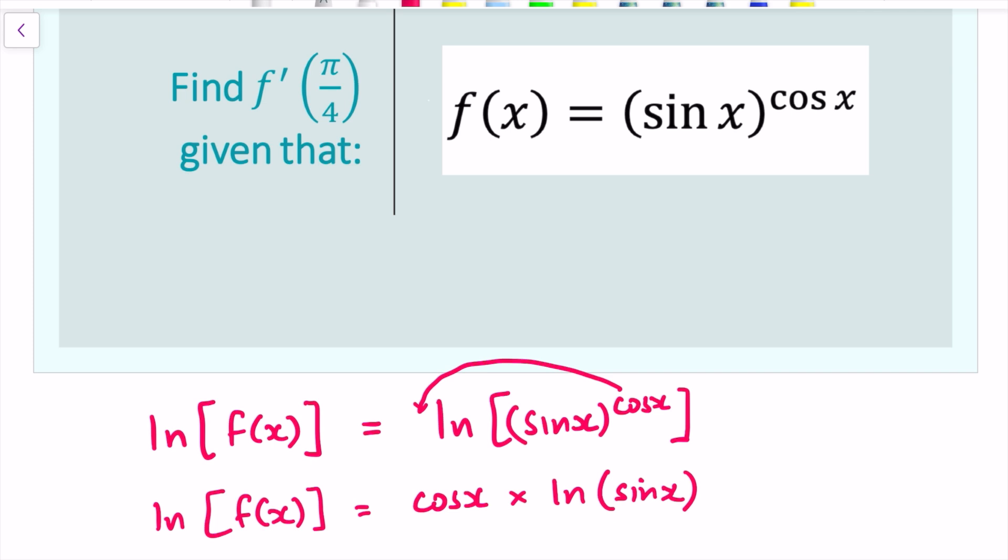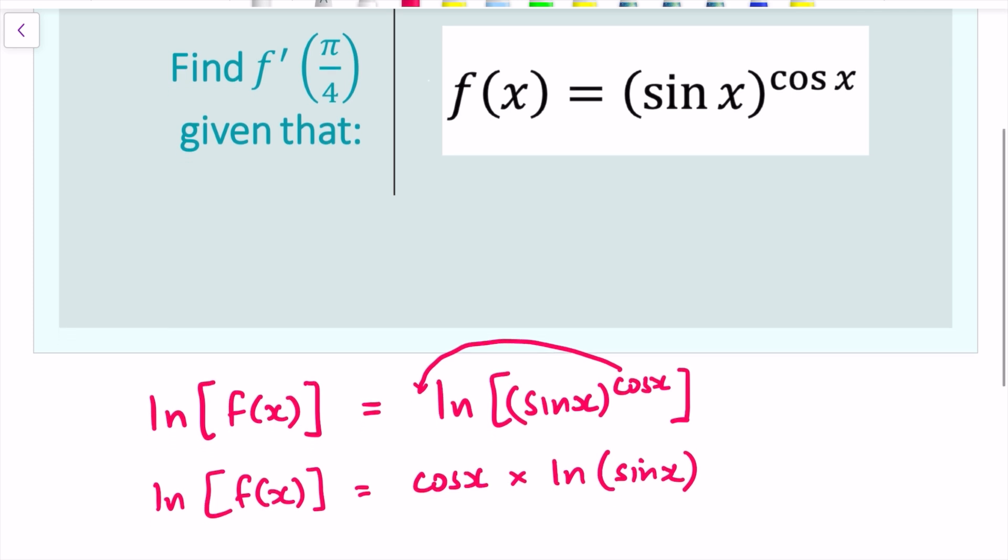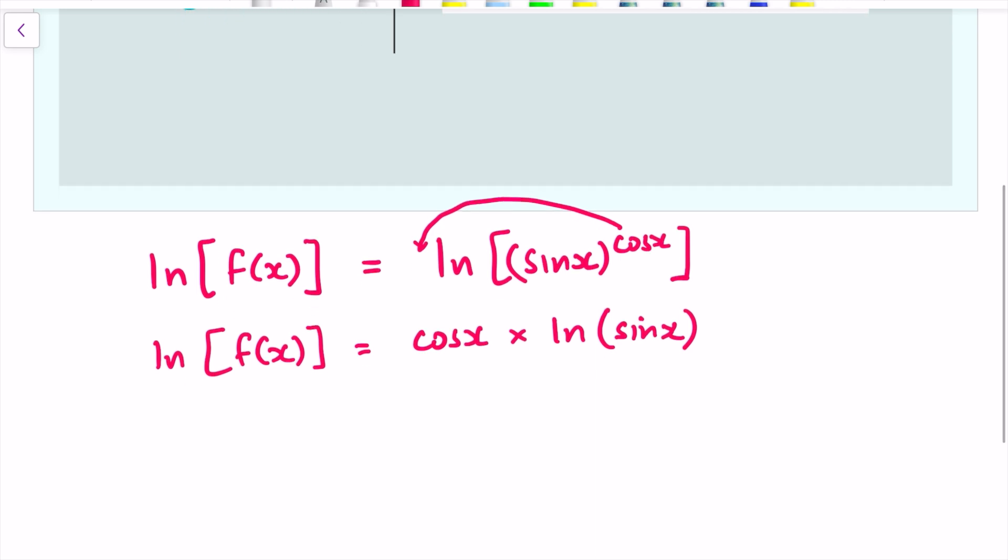There are other ways of doing it you can use exponentials but I think this is quite a quick way of doing it. Now what we want to do is differentiate this but we differentiate implicitly, and if you haven't seen implicit differentiation before it's going to be a common theme in a lot of the videos in this series. What we do is just differentiate the equation as it is.